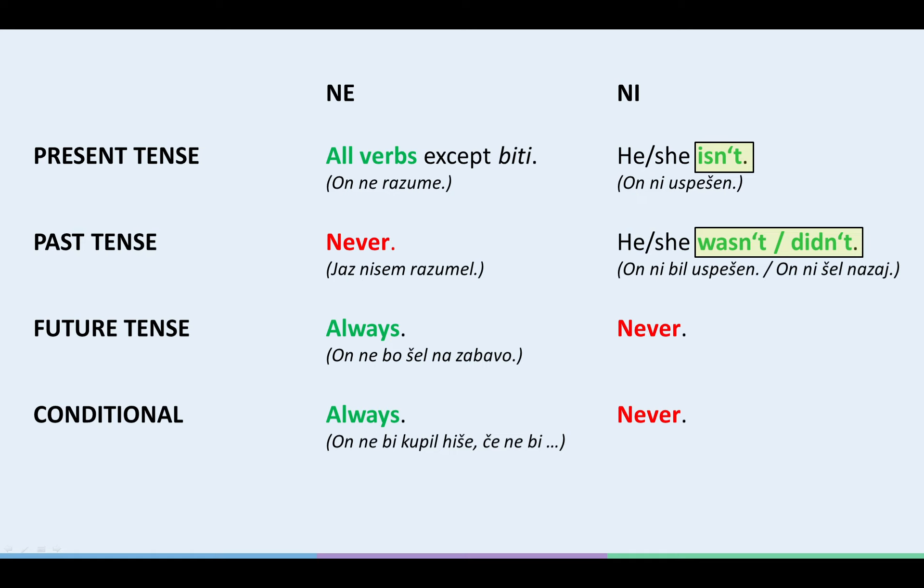So let's simplify matters as much as we can. When is NI used? And what does NI mean? NI can mean HE, SHE ISN'T. It can also mean HE, SHE WASN'T. That is when the negated form of BITI is used as a helping verb to form the past tense. And of course, HE, SHE DIDN'T.